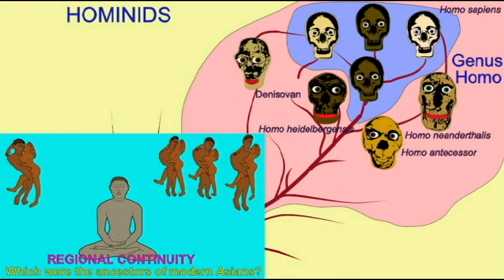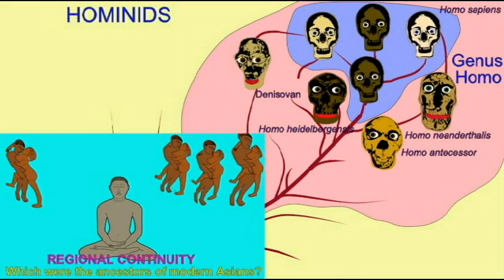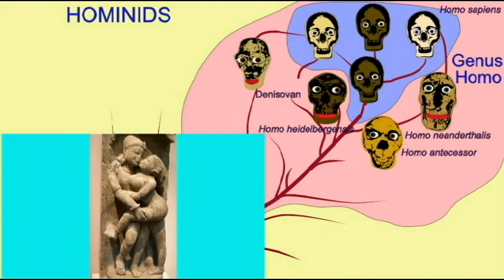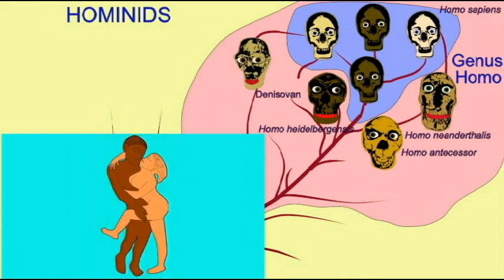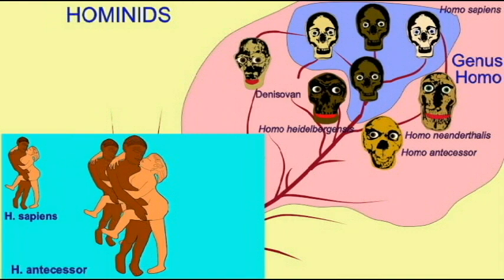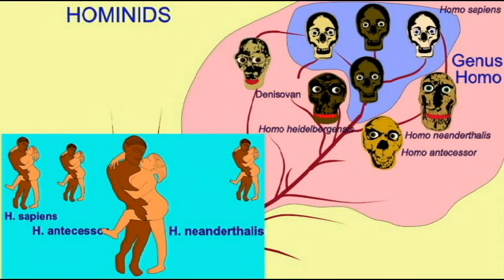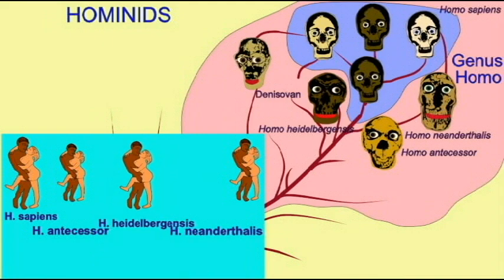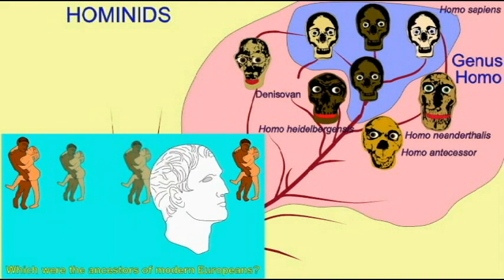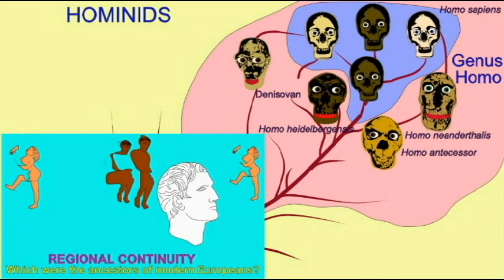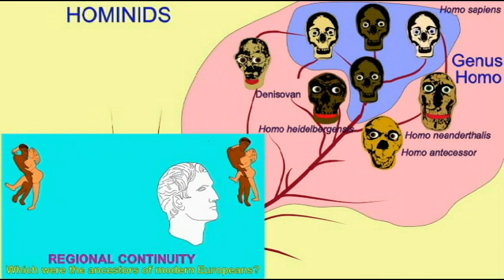Neanderthals do seem to have contributed at least some of the genetic information of Europeans and Asians. And the Denisovans, a group of hominids living in Asia, is now known to have contributed genetic information to Australian aborigines and Melanesians. And so, it seems that while the replacement model is predominantly true, to some degree there was interbreeding, and these other hominid species did contribute to some modern human populations.